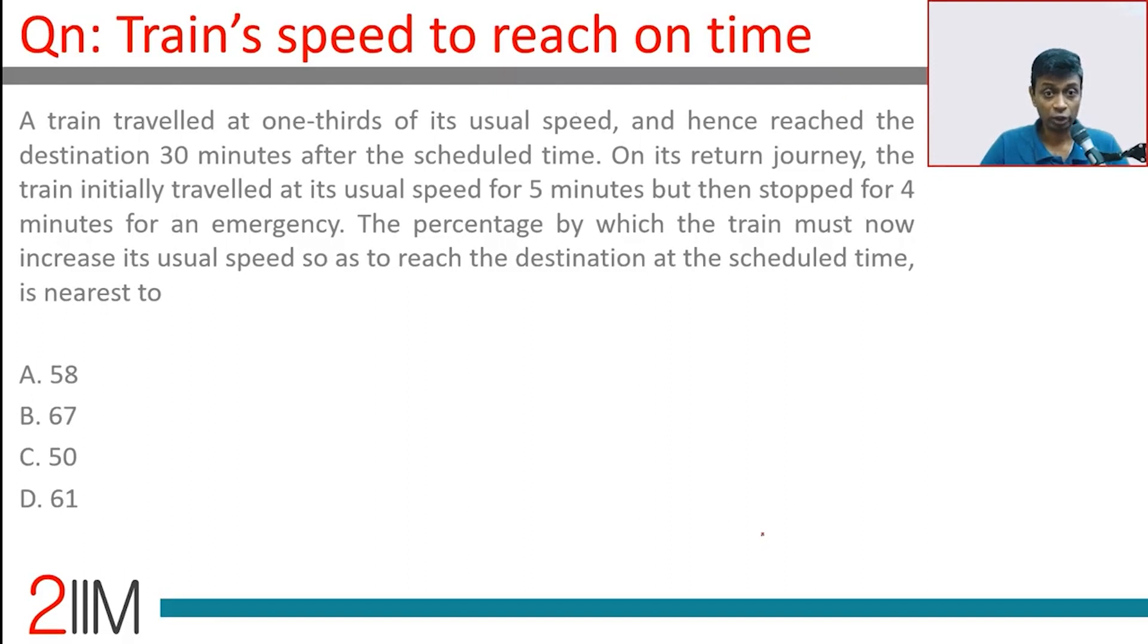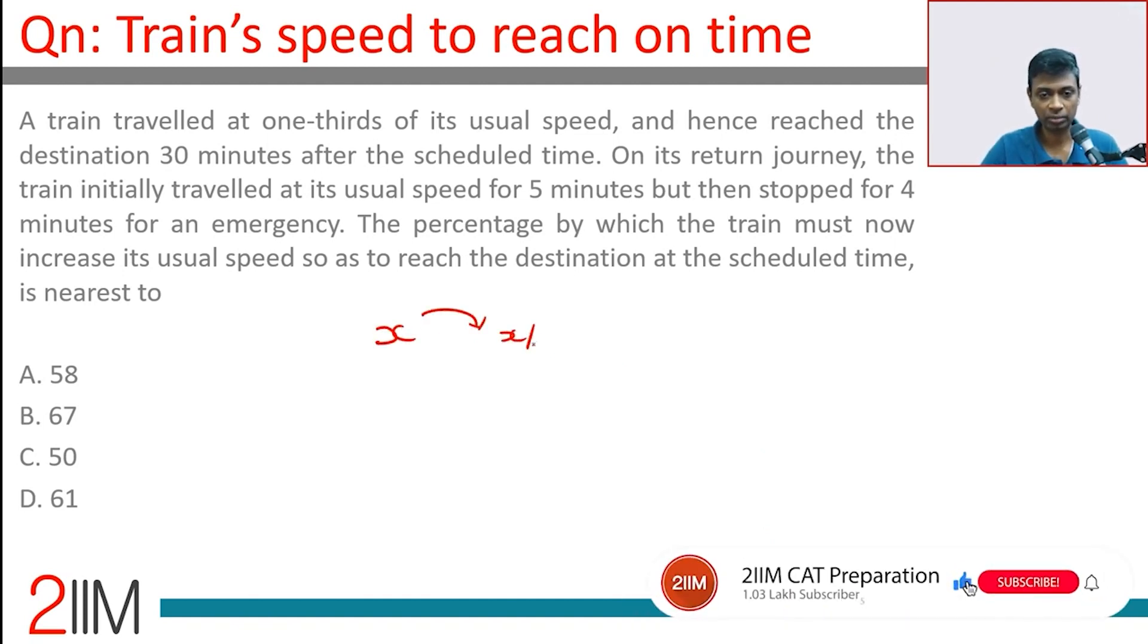The train traveled at one-third of its usual speed and hence reached the destination 30 minutes after the scheduled time. If the speed changes from x to x by 3, the time taken changes from t to 3t.